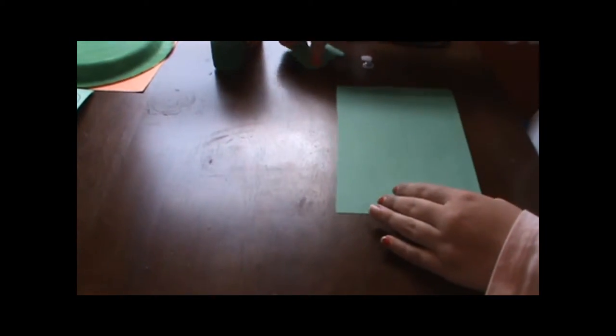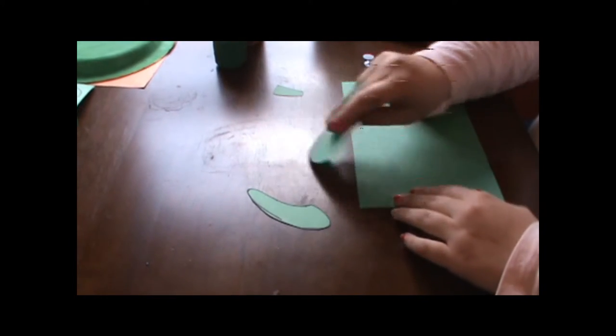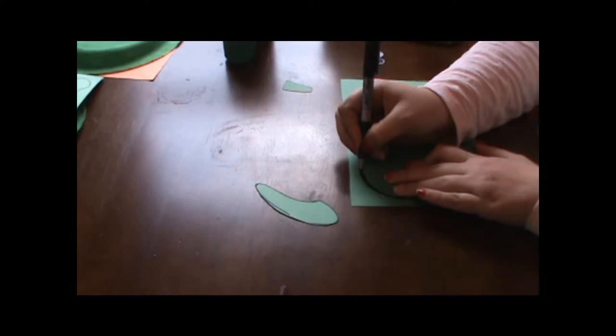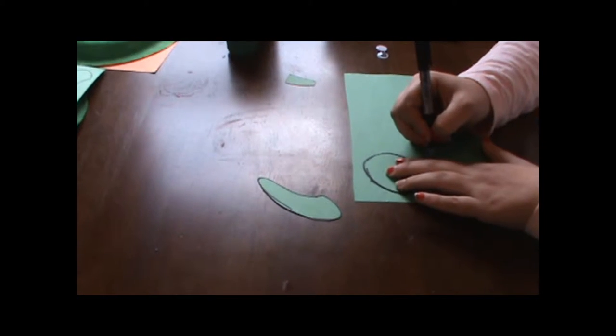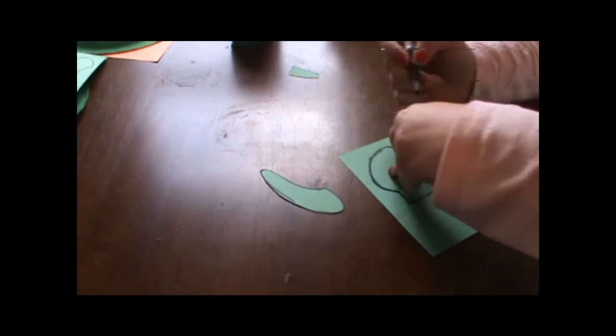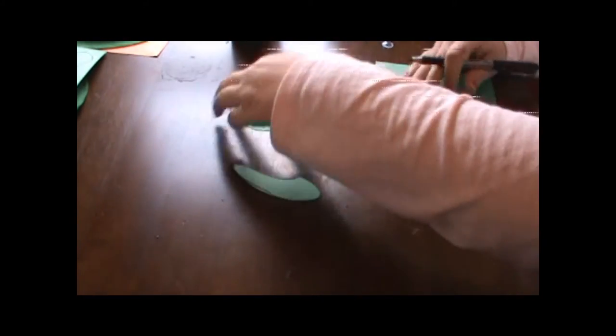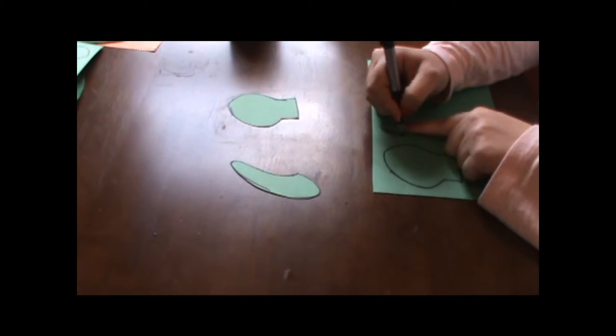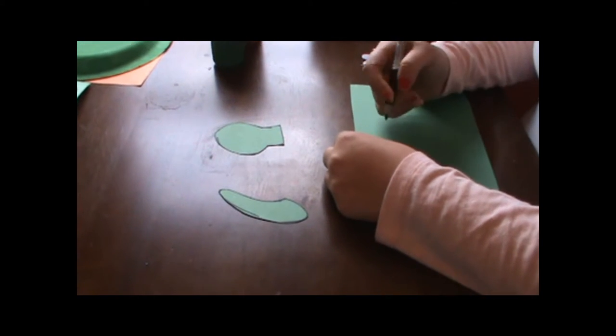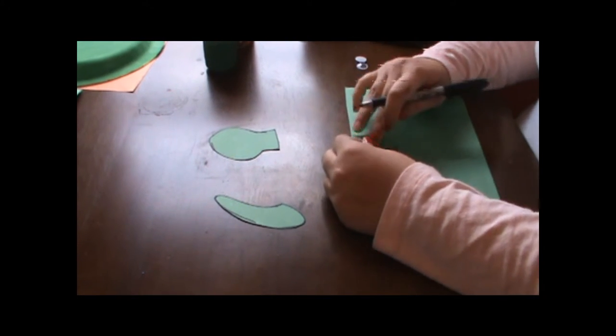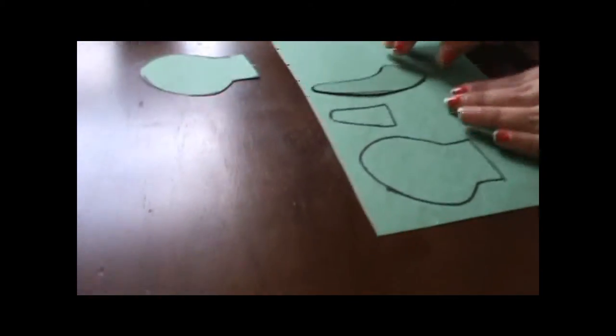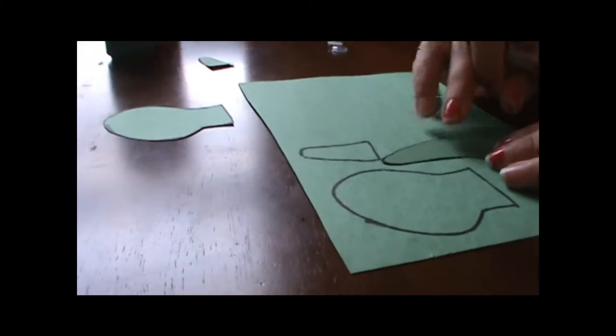Next you will need your half sheet of green construction paper and your turtle part templates. The first thing you need to do is trace the head. Take your time and follow the pattern. The next piece you should trace is the tail. When you get to the flippers it is a little bit difficult. You need to do two of the flippers to this side and then you need to flip it over and do two flippers to this side.